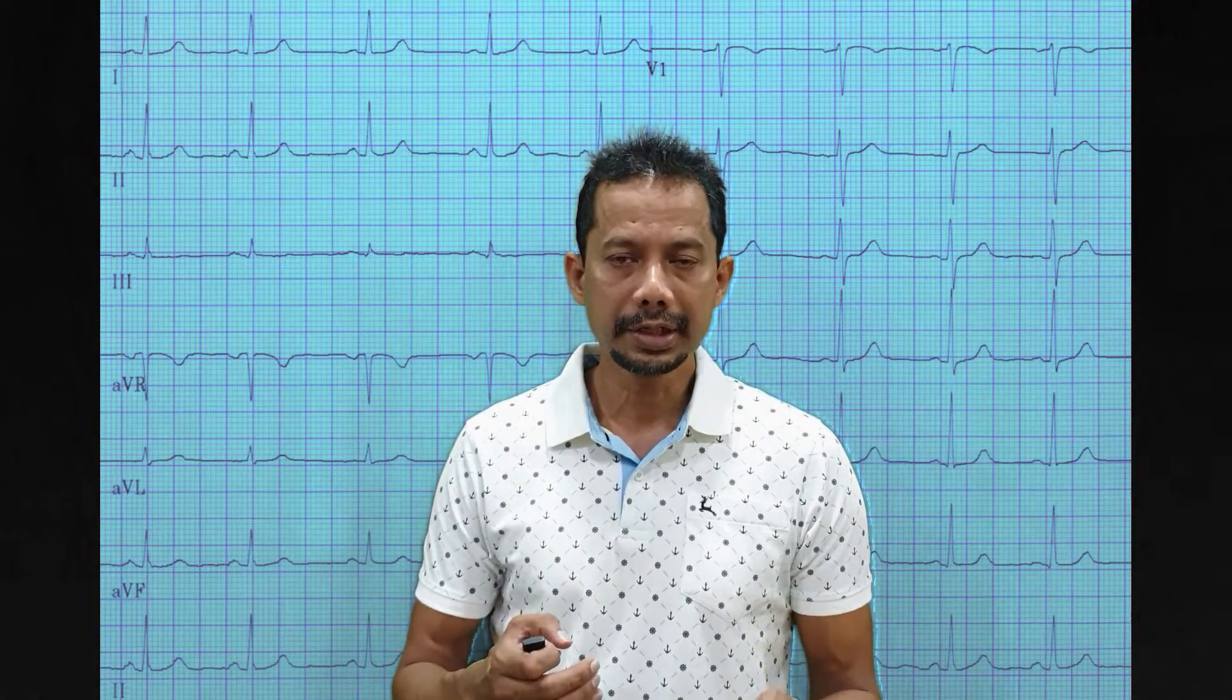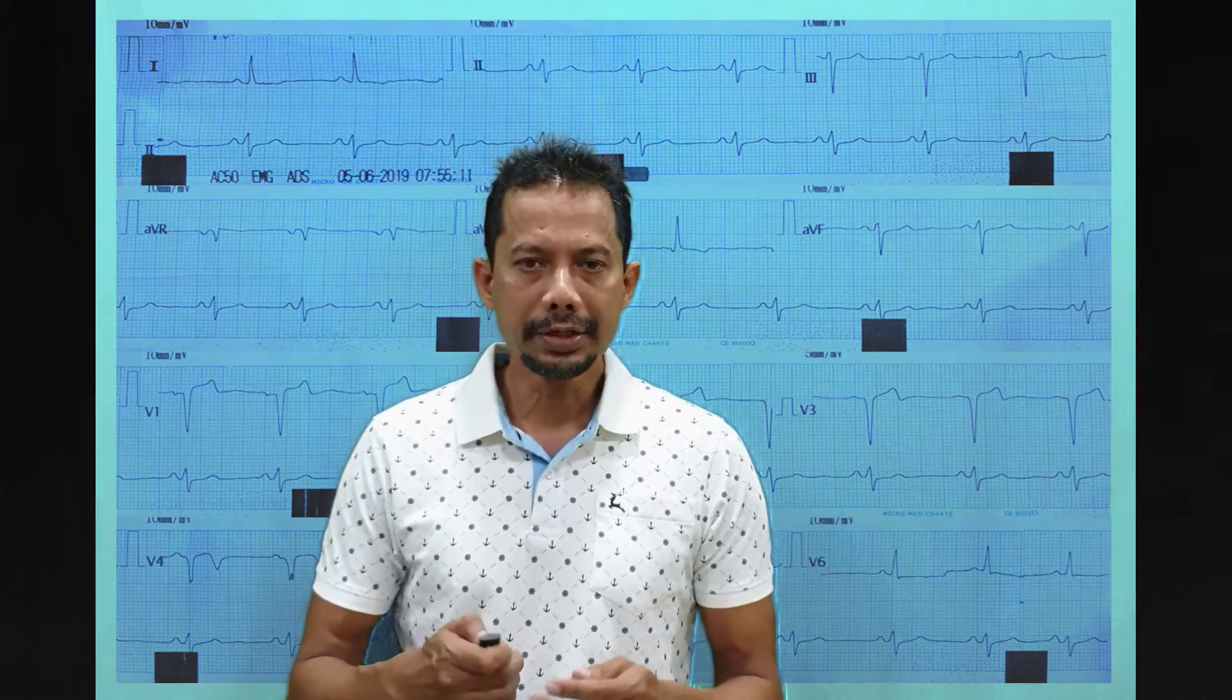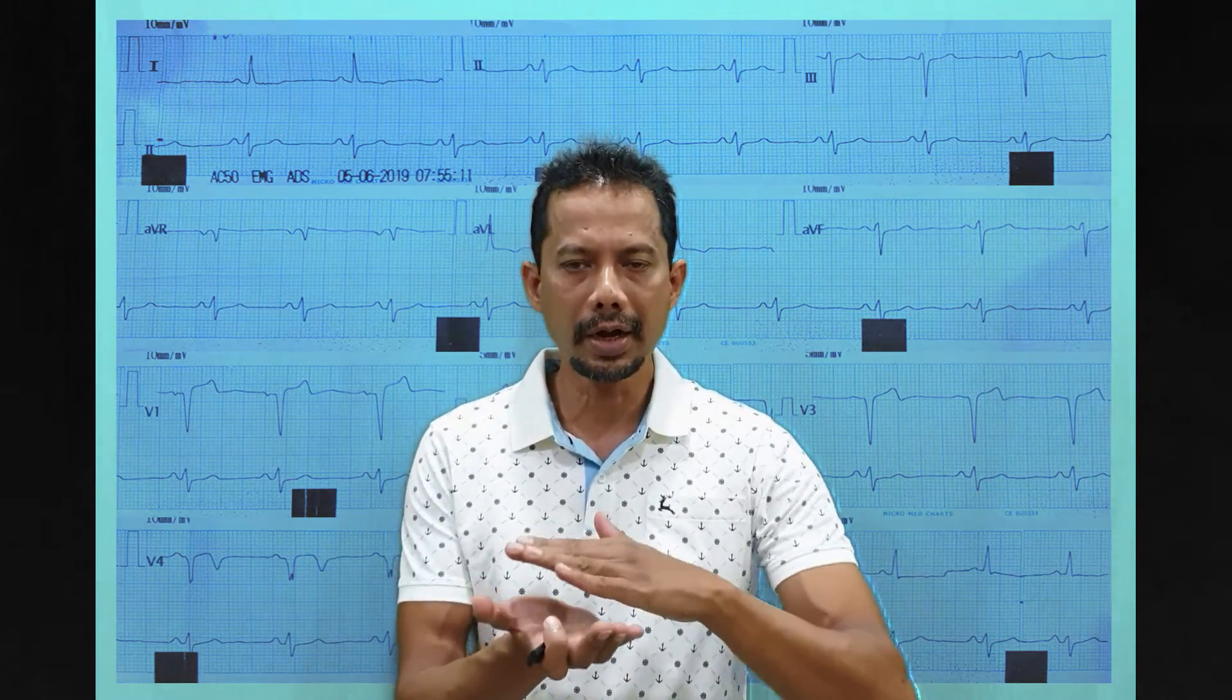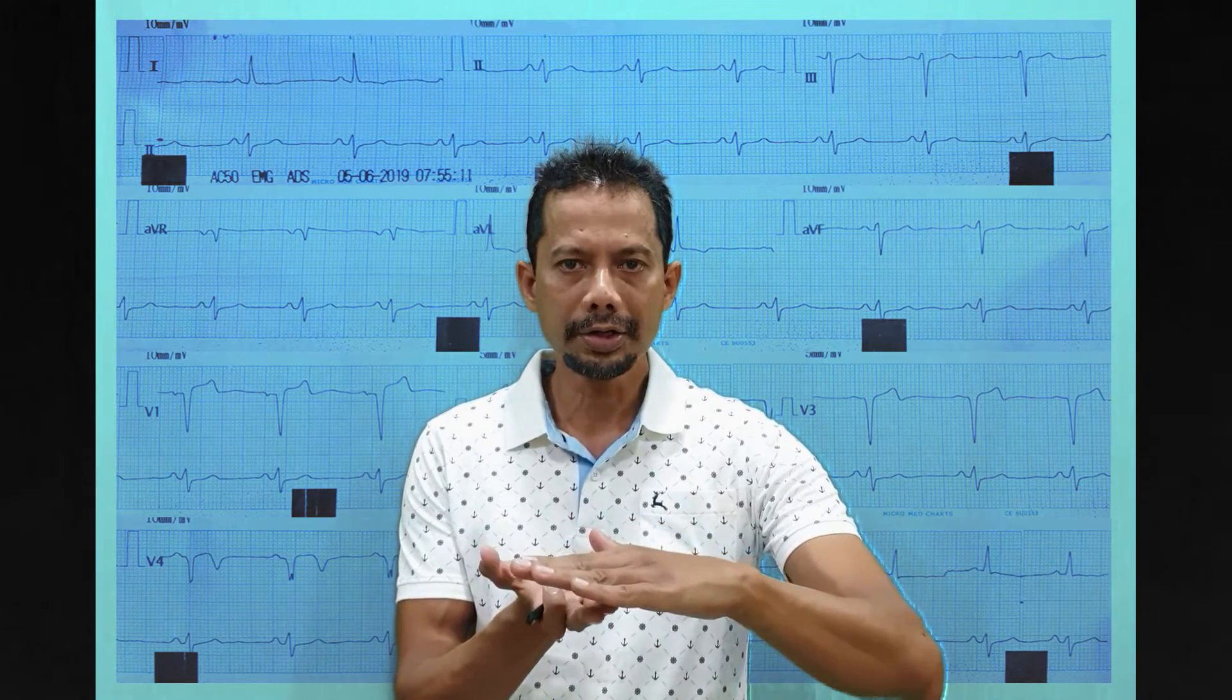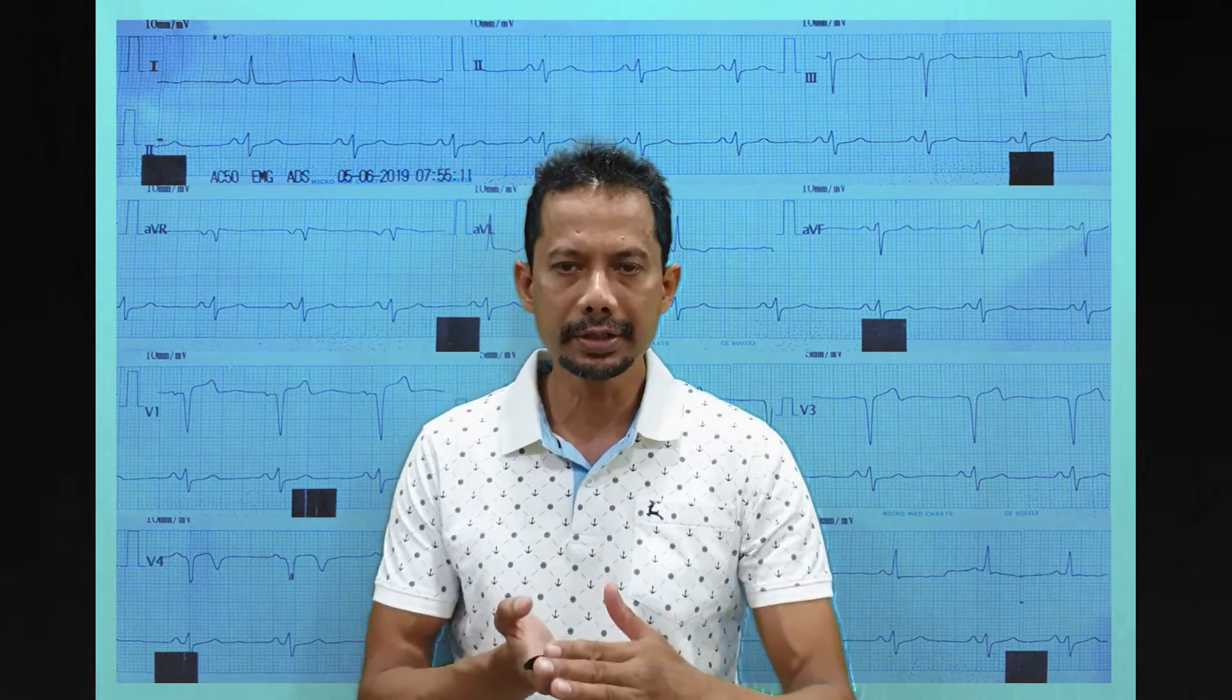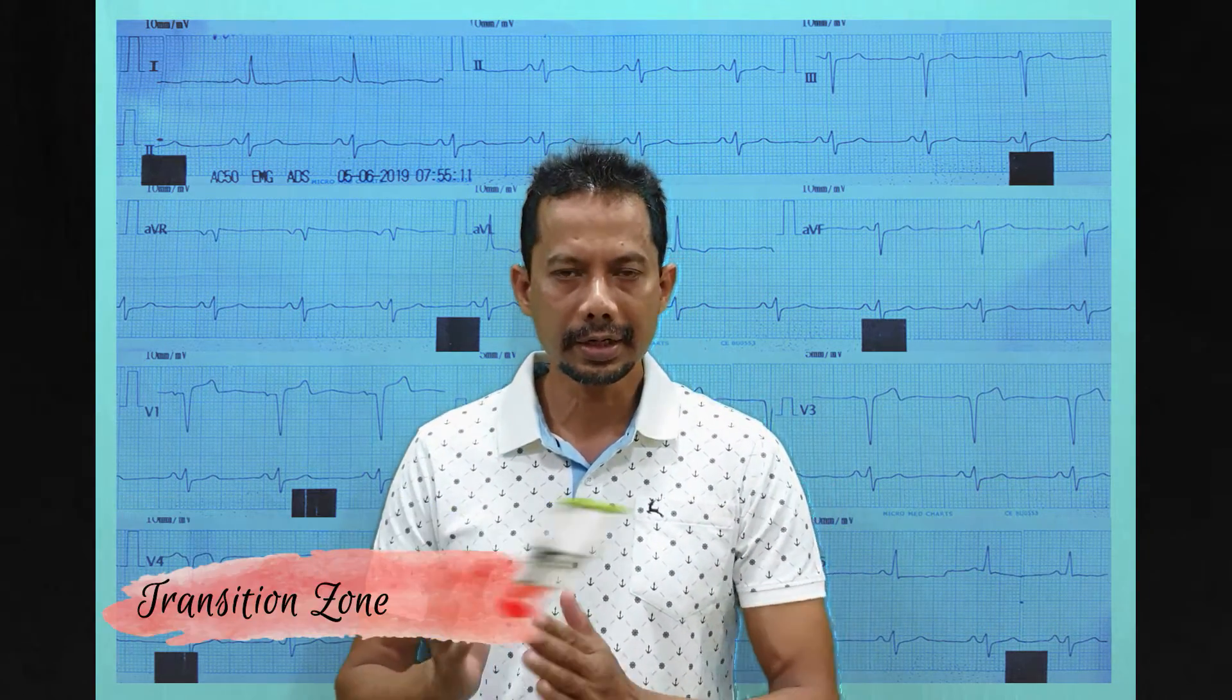There are six anterior chest leads. They look at the heart in the horizontal plane. In this video we will discuss all about the transition zones and electrical rotation of the heart.